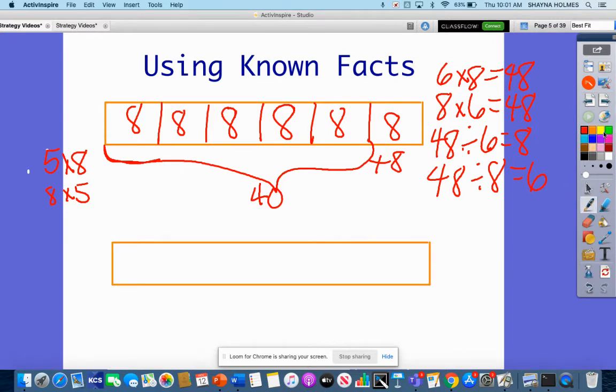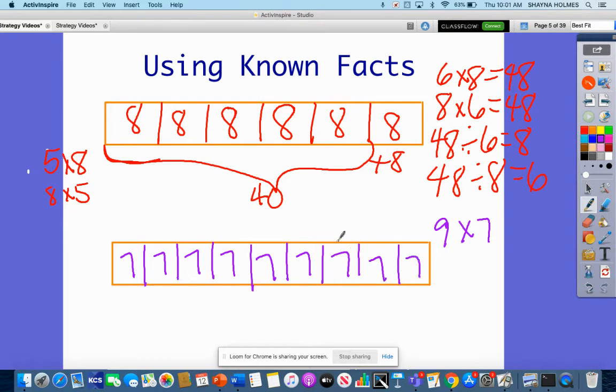Let's look at a more difficult problem: nine times seven. Sevens are definitely a little fuzzy. I'm going to divide this into nine sections - one, two, three, four, five, six, seven, eight, nine.